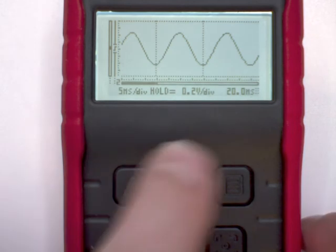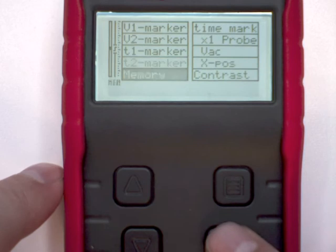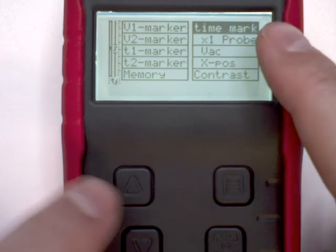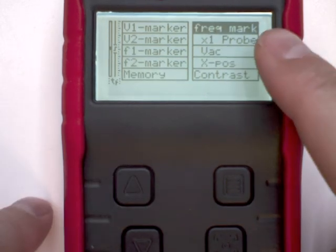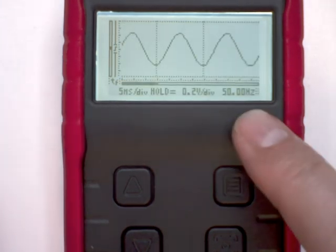If we would like to change that to a frequency readout, we press the menu button, and we change the time mark with the arrow keys to frequency mark, and the unit will automatically display our 50 Hz mains frequency.